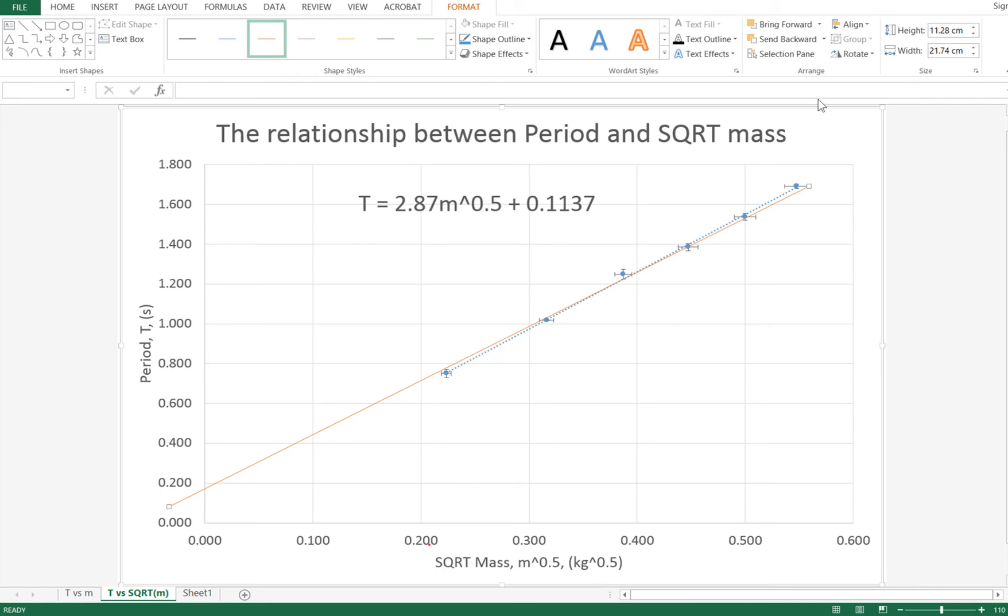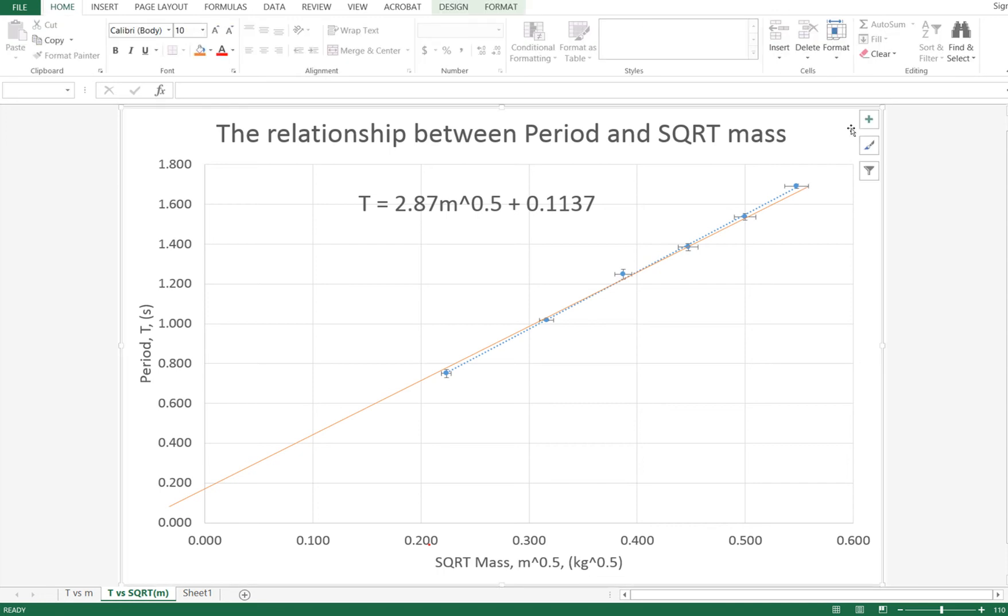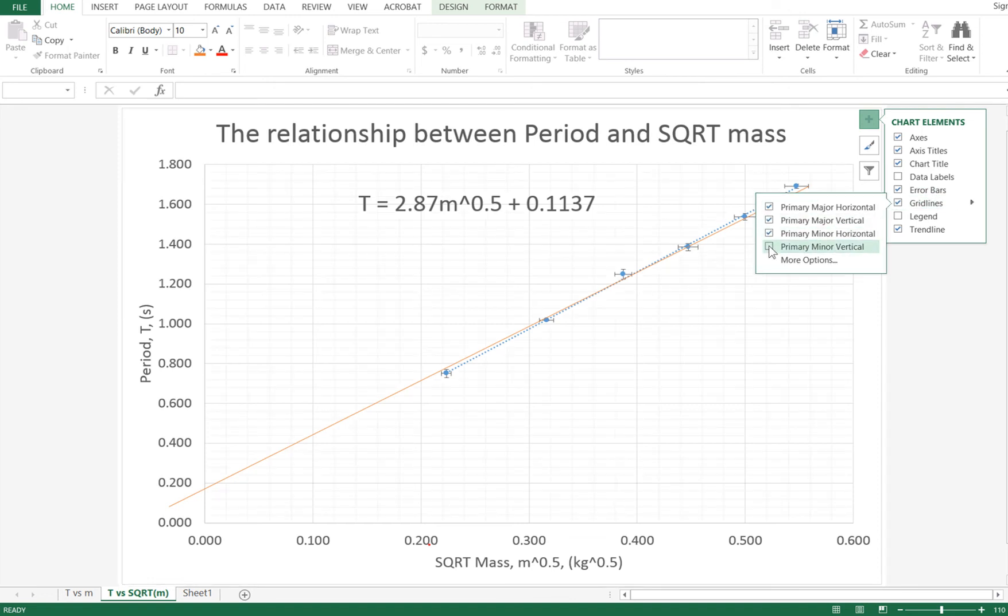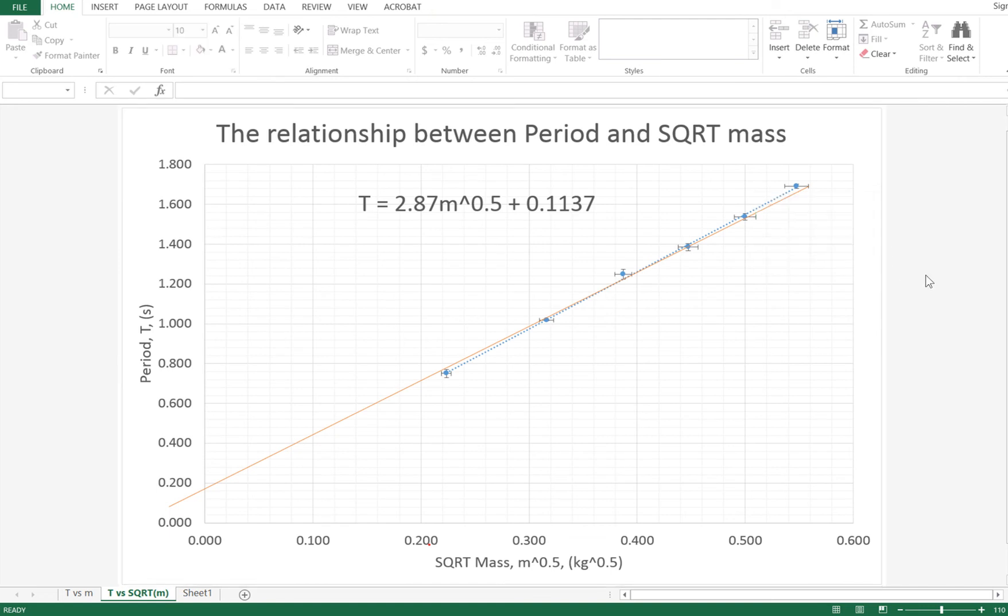What we now have to do is actually calculate the gradient of our line of worst fit and unfortunately this job's done by hand as well. Now at the moment my grid lines are massive and I've got no way of accurately determining what the gradient is from the graph. So I want to click on the graph so the plus button comes up. I want to go to the grid lines and then select primary for both the horizontal and the vertical. And as you can see that's now added some more grid lines to my graph which makes it a lot easier for me to work out where things are.